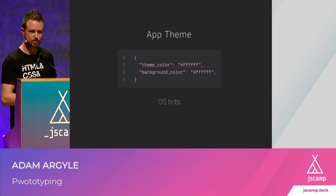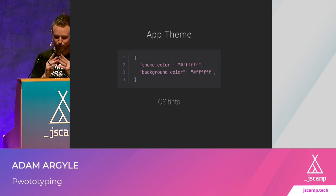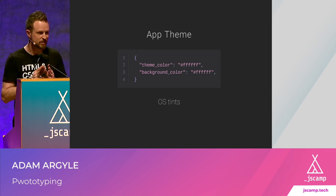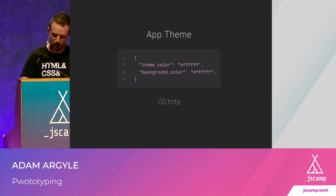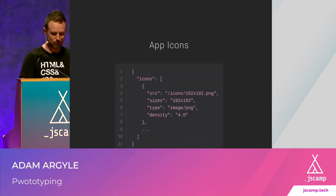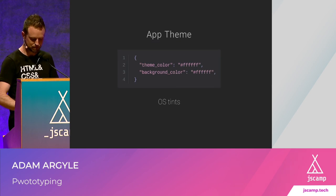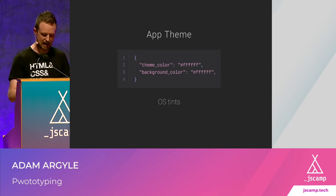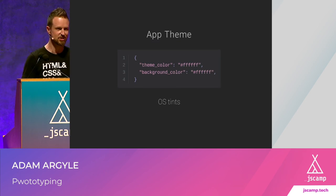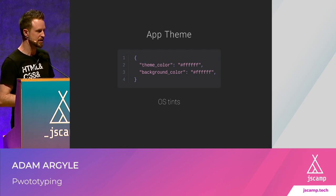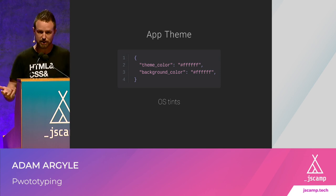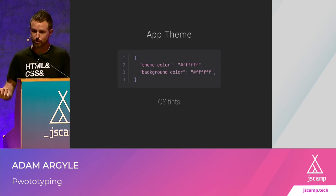Then we can set a theme color — this is where stuff gets really fun for designers. CoinSafe uses white for the theme color and white for the background color. The app theme is really nice on Android — you can see these colors reflected in Chrome's top nav. I call them OS tints: you get to give hints to the operating system about what kind of colors you want shown on your application.